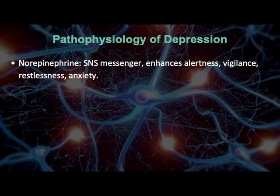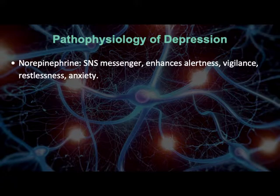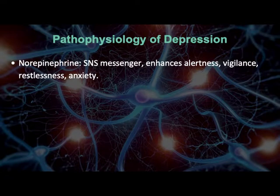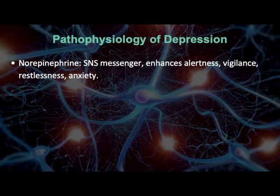Let's talk about the neurotransmitters first: norepinephrine, dopamine, and serotonin. Norepinephrine is a metabolite of dopamine — dopamine is metabolized into norepinephrine. This is a sympathetic nervous system messenger, generally there to signal fight or flight, to enhance alertness, vigilance, energy, restlessness, anxiety, and vigor — all those things that activate systems in response to an external stimulus. A high release of norepinephrine might make you feel jittery or anxious, and if chronic, that can feed forward into the anxious feelings associated with depression.